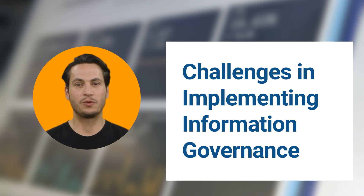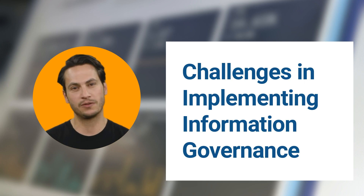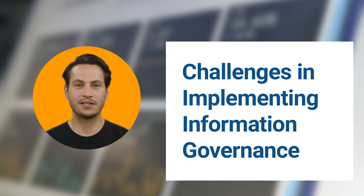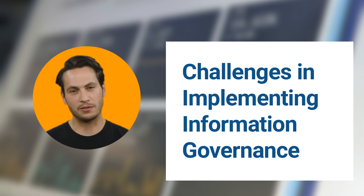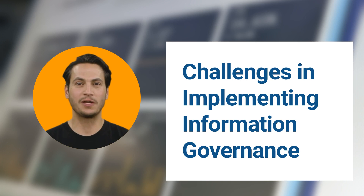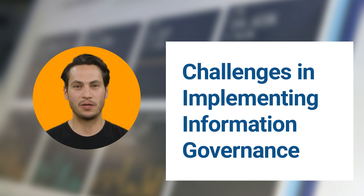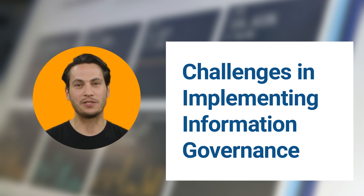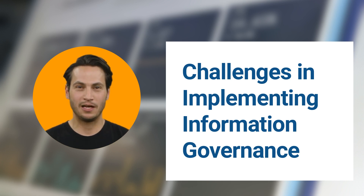While the benefits are clear, implementing information governance is not without its challenges. Organizations often face a lack of awareness about the importance of information governance or the risks associated with poor data management practices. Additionally, organizational silos and resistance to change can hinder the adoption of information governance practices. Complexity in data ecosystems and technological limitations further complicate the implementation process. Overcoming these challenges requires a holistic approach involving cultural change, strong leadership support, and effective communication across all levels of the organization.